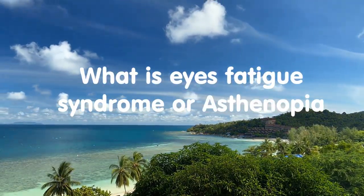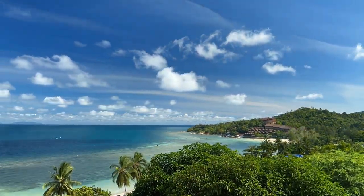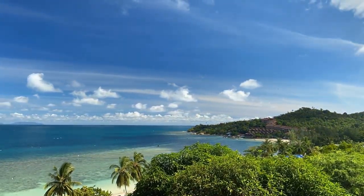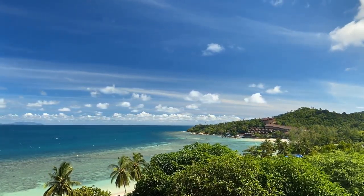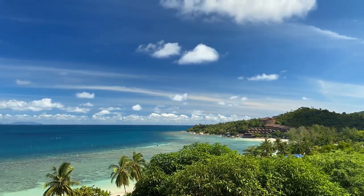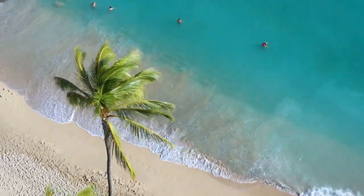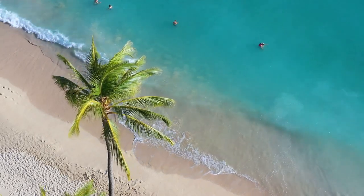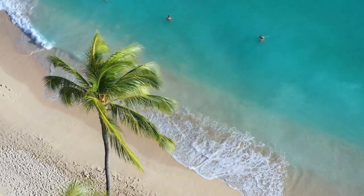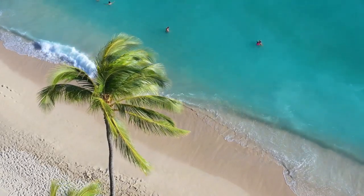What is Eye Fatigue Syndrome or Astenopia? This is the condition when during visual work the eyes get tired fast. This happens more often when the observed object is at very small distance from the eye. It most often occurs with people who read a lot or work on a computer incorrectly, without taking their eyes off the screen and forgetting to switch the gaze to distant objects and without blinking.